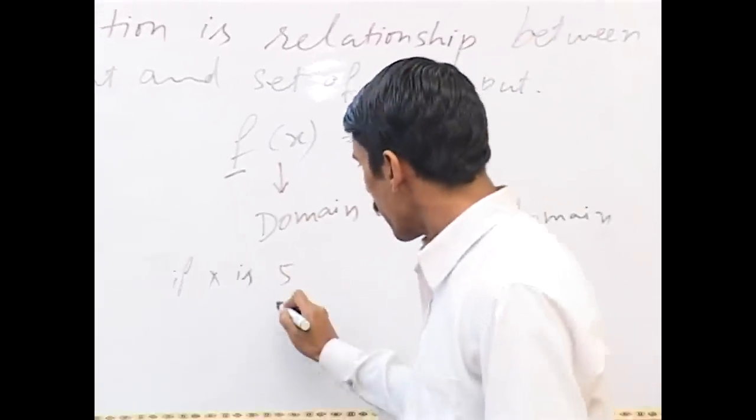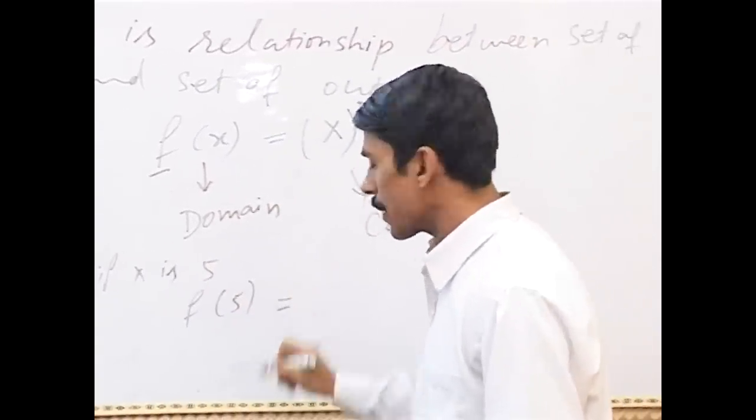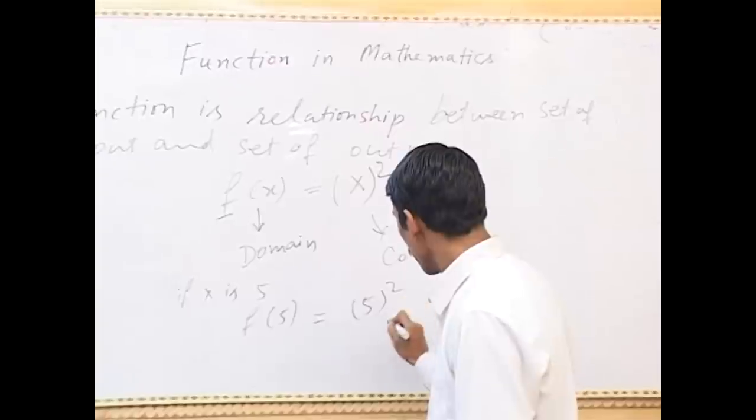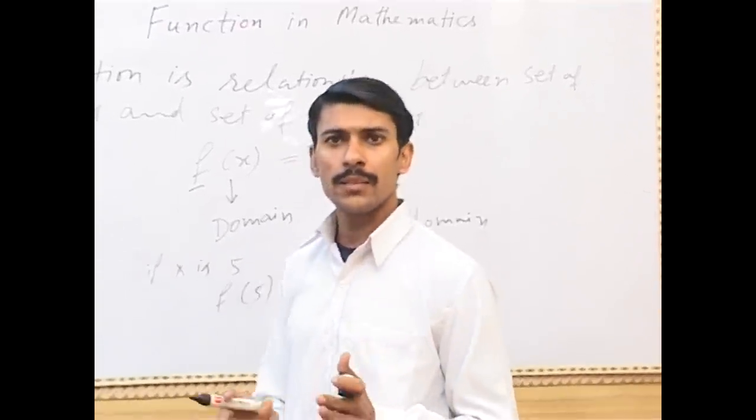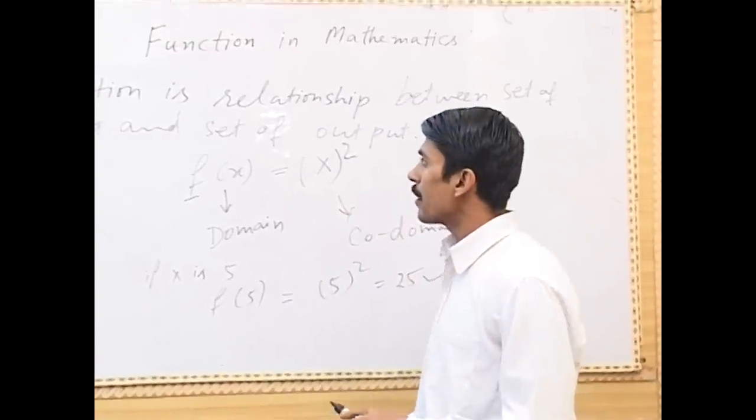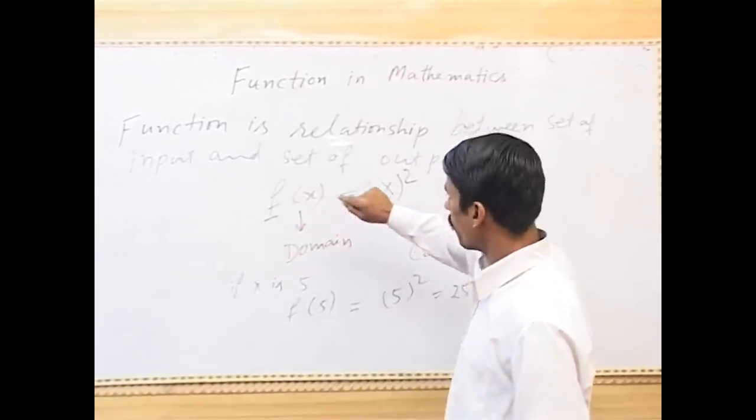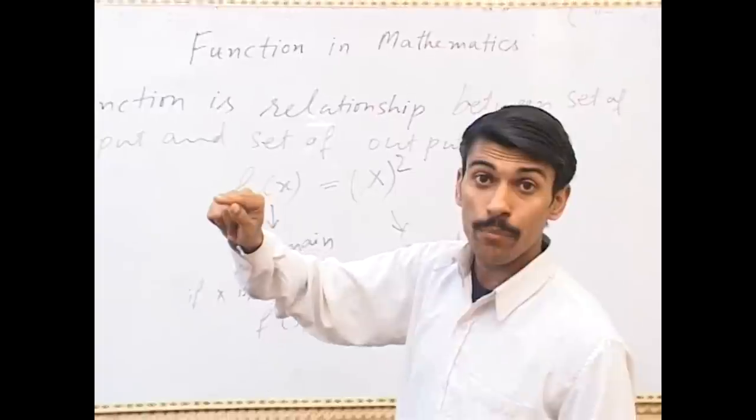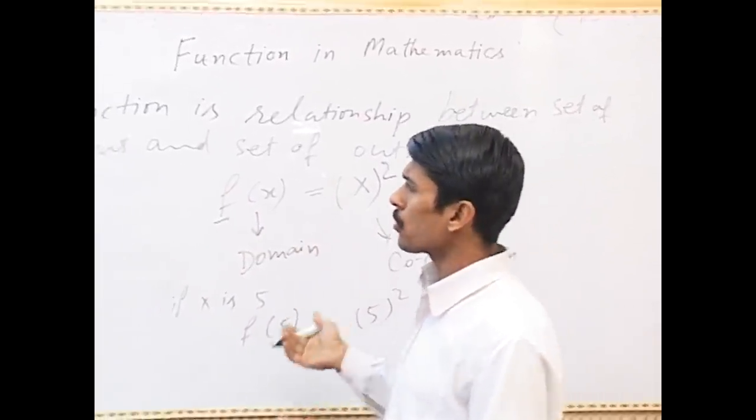Then f(5) we will get output. This is 25. This is a small example that function is just relationship between input and output. If we put the input we will get the output. Suppose there are lots of functions.